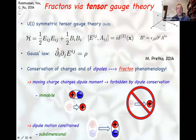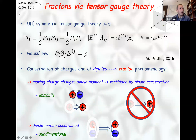The reason is that this Gauss's law encodes not just conservation of charge, but also conservation of dipoles. As Michael Pretko noted in 2016, the motion of a charge corresponds to the creation of a dipole. Since dipoles are conserved in this generalized Gauss's law, charges cannot move. On the other hand, dipoles can sometimes move, but often in a sub-dimensional way — for example, perpendicular to the orientation of the dipole.